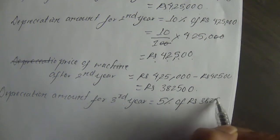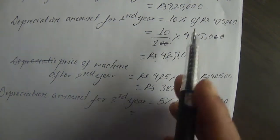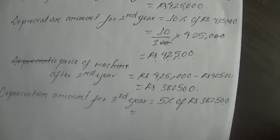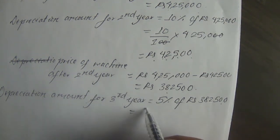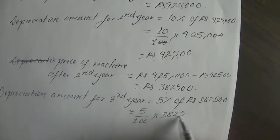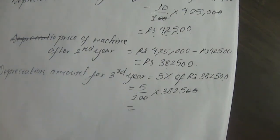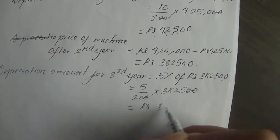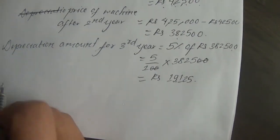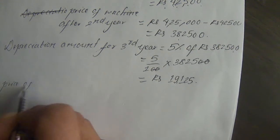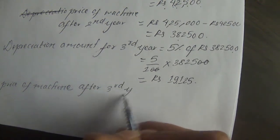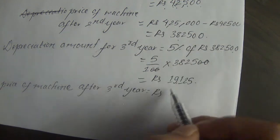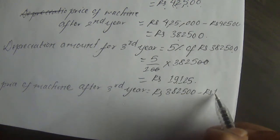The depreciation amount for the third year is equal to 5% of Rs. 3,82,500. Price of machine after third year equals Rs. 3,82,500 minus Rs. 19,125.